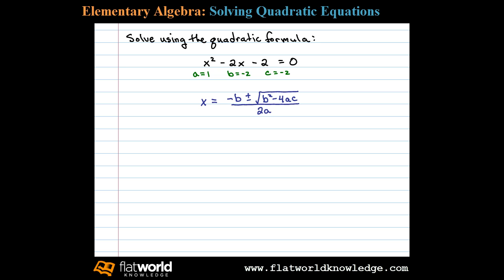We begin by substituting these values in and then simplifying. Negative B, we have negative negative 2, plus or minus the square root of negative B squared, negative 2 squared, minus 4 times a which is 1 times c which is negative 2, all divided by 2 times a. A is just 1.